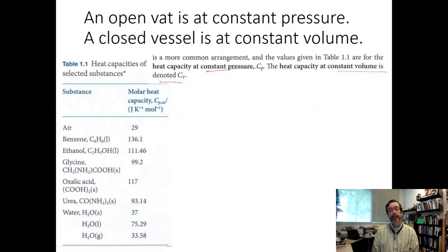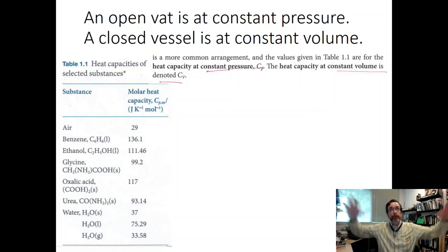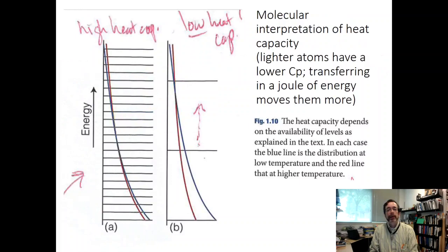Because we deal with gases under pressure, heat capacity differs depending on whether pressure or volume is held constant. Constant volume (C_v) is mathematically simpler, but constant pressure (C_p) is more chemically relevant — an open beaker on the bench is automatically at constant atmospheric pressure, since you're not changing the whole atmosphere. We'll start with some constant-volume examples, then move to the more practical constant-pressure calculations.